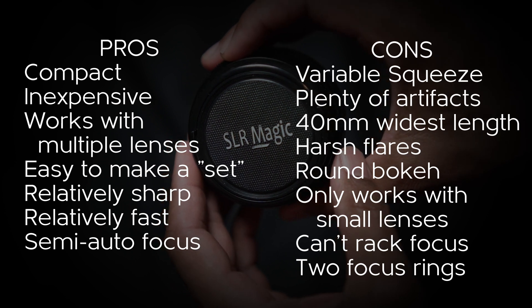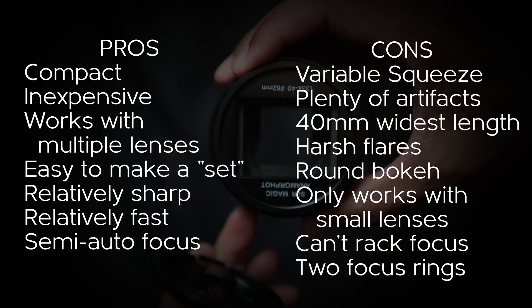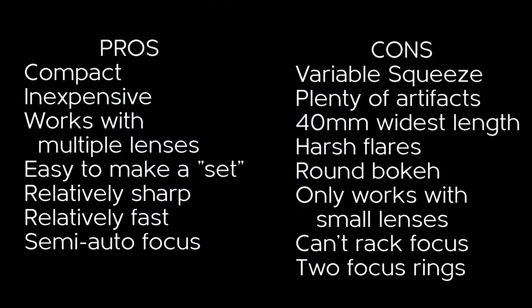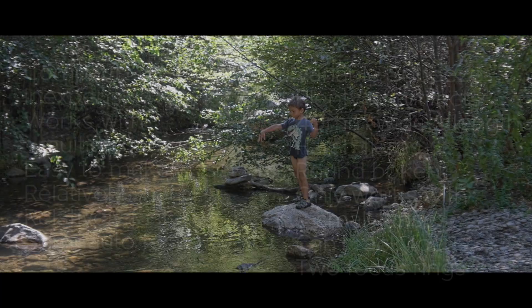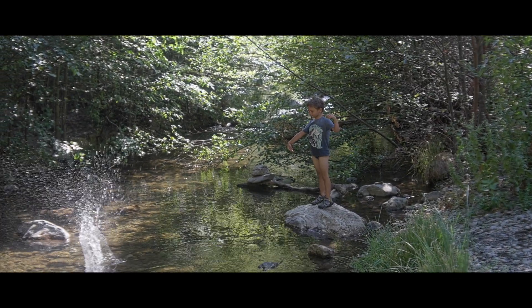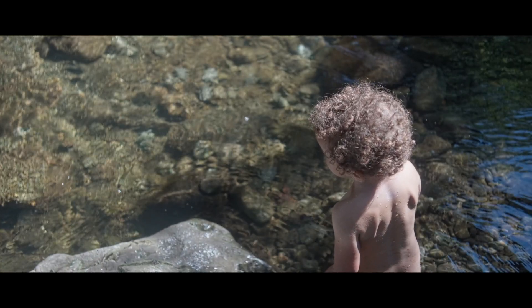In this price range, you're typically balancing the pros and cons you see on this list, and to understand them all, you have to see the sample footage in the review. If you knew me, you'd be surprised by my foray into anamorphics — I don't particularly like oval bokeh. I've got nothing against them, I just don't think they're any more beautiful than round ones. And I'm not fond of horizontal flares.